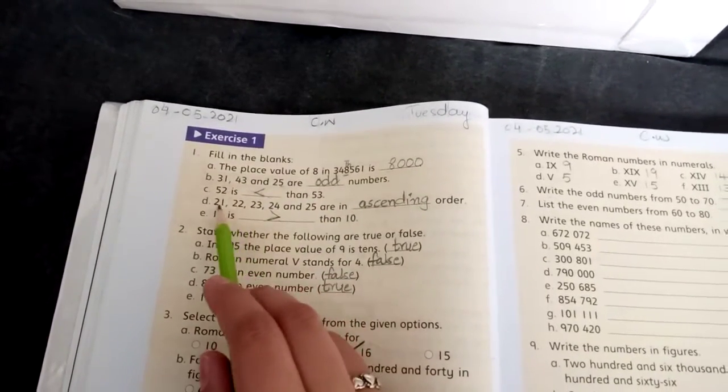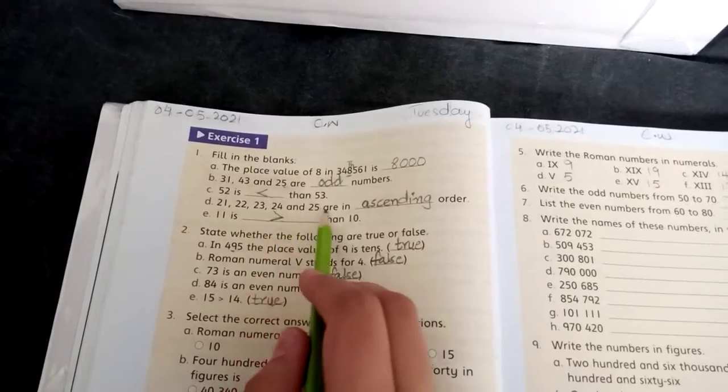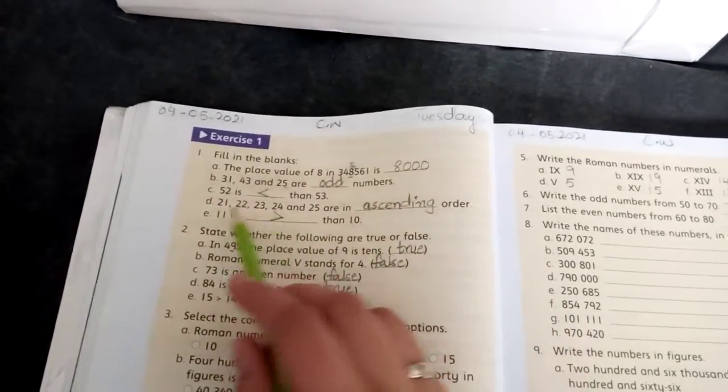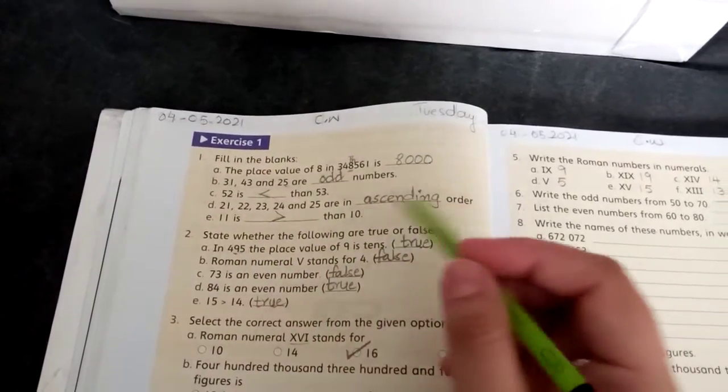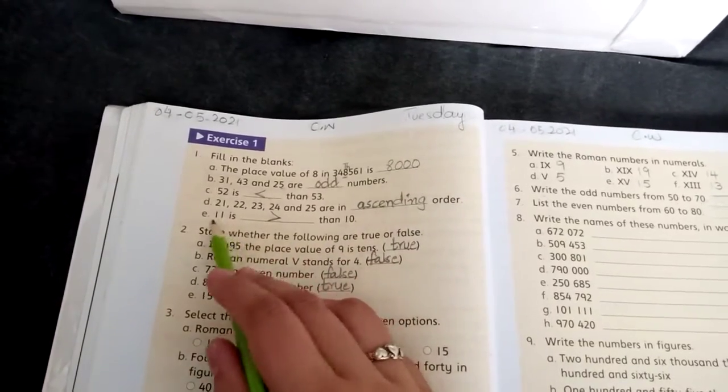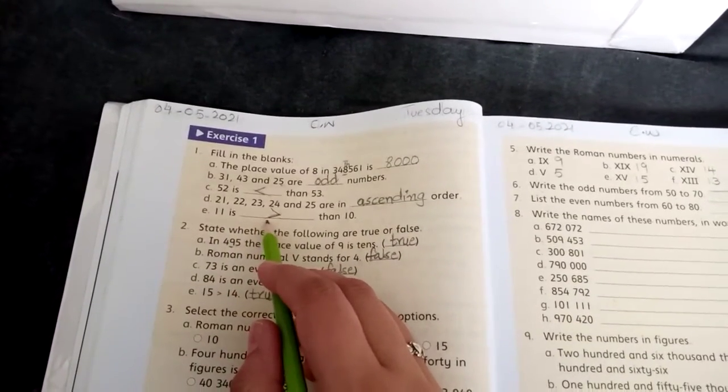21, 22, 23, 24, and 25 are in dash order. Kaunse order mein chote se bada ja raha hai, to ascending order. 11 is dash than 10. 11, 10 se kya hai, bada hai, to is pe aap ne crocodile ka face open kar dena.